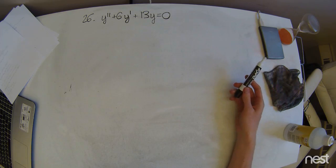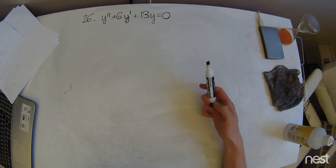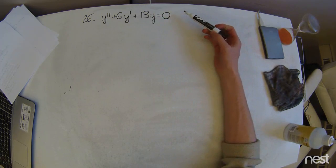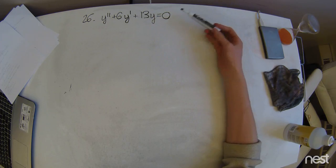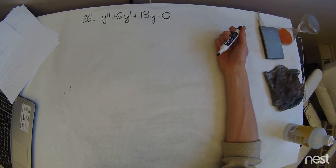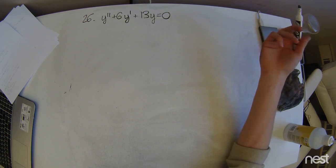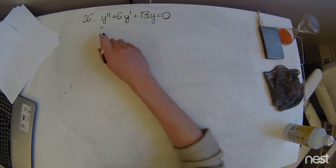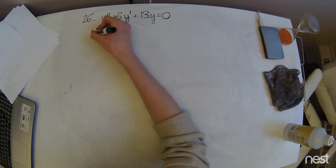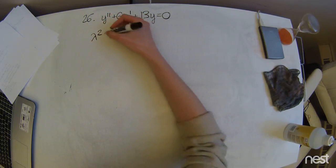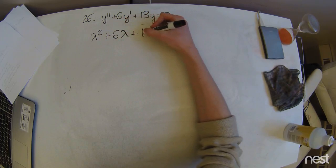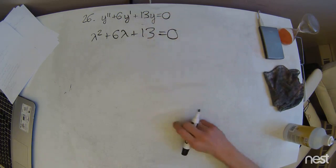To solve this ODE, we're going to notice that it's actually a homogeneous ODE since there's no functions of t going on. So we're going to set up our characteristic equation using the coefficients of each of these terms here. That's going to look like 1 times lambda squared plus 6 lambda plus 13 equals 0.